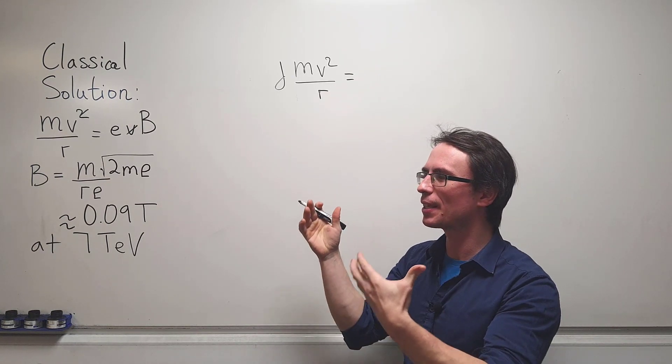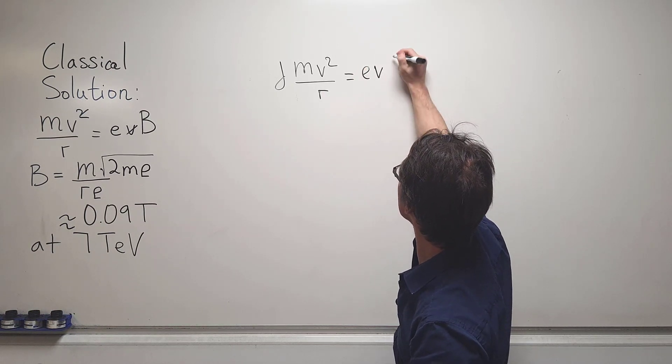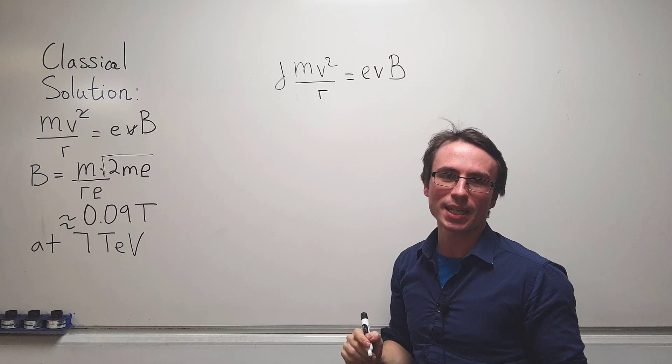However, the charge of a proton is the same as that of the electron but opposite, so we can write this as ev times b.